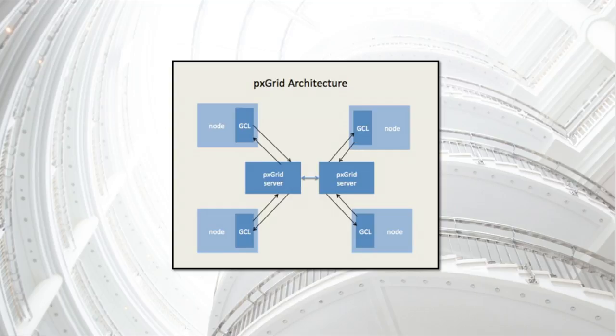PxGrid uses the client-server model. PxGrid clients, also called nodes, connect to a central PxGrid server or cluster of servers. The server cluster handles message routing and administrative control over the PxGrid network. Typically, two servers make up a single cluster, but there can be more.